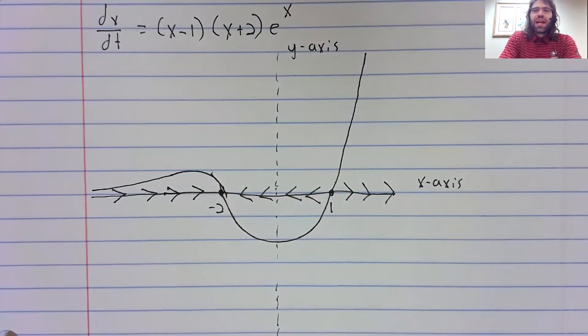It's the exact same analysis. It's just that instead of creating a sign chart to decide where the function is positive or negative, we look at a graph to determine where the function is positive or negative.